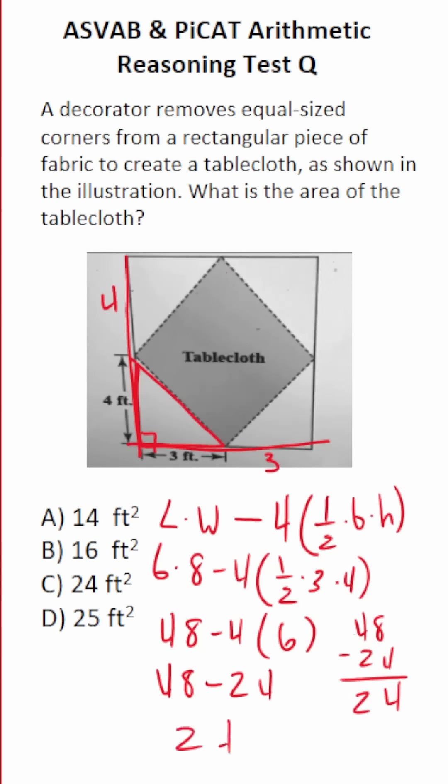So the area of this tablecloth is C, 24 square feet. Again, this is not a square. We determined that by looking at the lengths of its diagonals. And to find the area of the tablecloth, we found the area of the big rectangle. And from that, we subtracted each of the 1, 2, 3, 4 triangles in each corner. So that is that one.